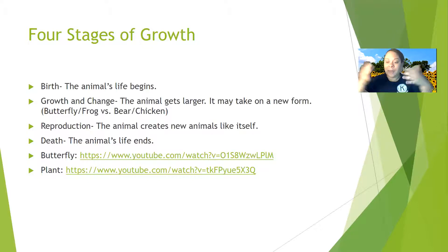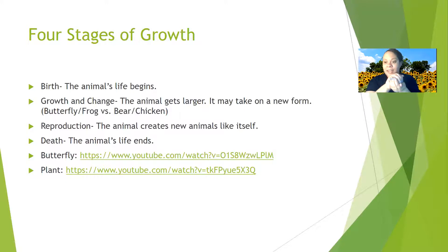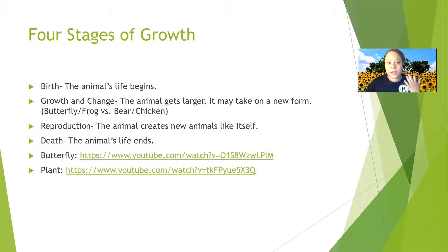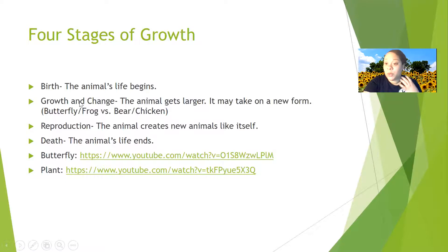Bears come out as baby cubs and just get bigger — they don't change form. Same thing with chickens: there's the egg, then the chick pops out very small, and then it becomes a big chicken. It doesn't change form, it just gets bigger. So they're born, then there's growth or change — either they grow bigger or change into something totally different, like a caterpillar into a butterfly.